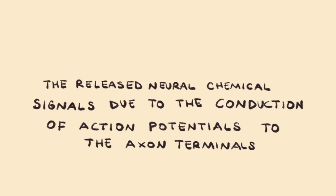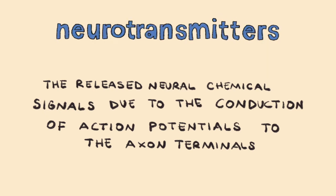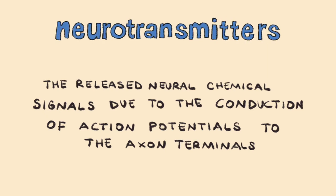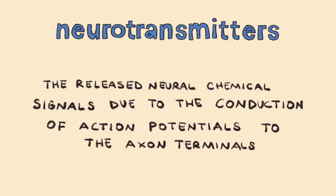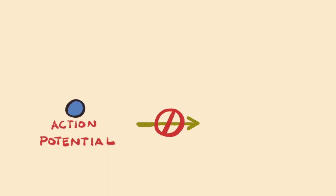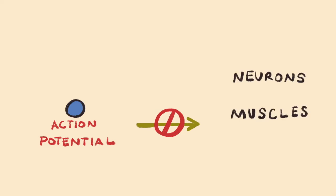The conduction of action potentials to the axon terminals will lead to the release of neural chemical signals called neurotransmitters. Neurotransmitters are important because action potentials cannot pass across the synaptic cleft to stimulate the next neuron, muscle, or gland.